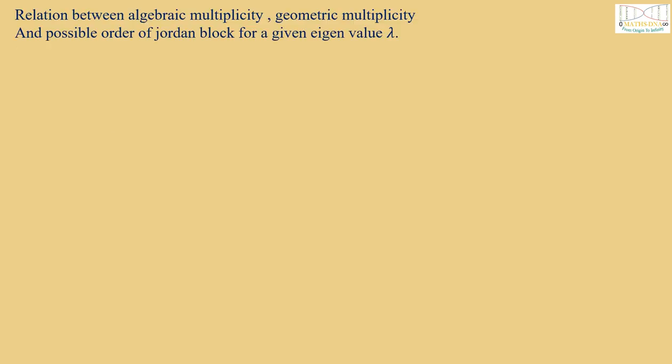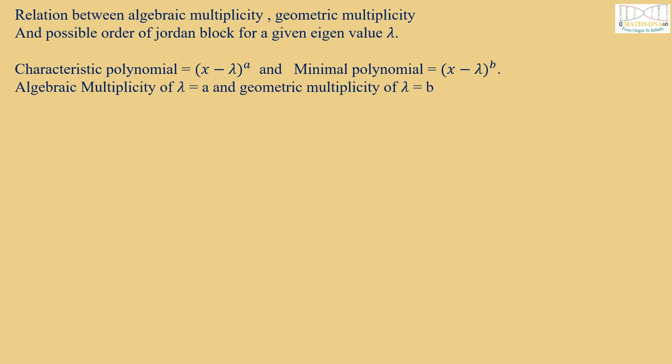Let us also study the relation between algebraic multiplicity, geometric multiplicity, and possible order of Jordan blocks for a given eigenvalue λ. Suppose characteristic polynomial equals (x-λ)ᵃ and minimal polynomial equals (x-λ)ᵇ. The algebraic multiplicity of λ is a and geometric multiplicity of λ is b. Now if b equals a, then the respective Jordan block is Jᵦ(λ) = Jₐ(λ) as b and a are the same.